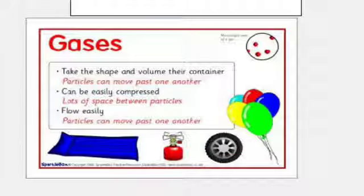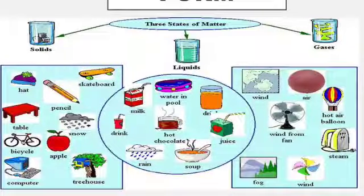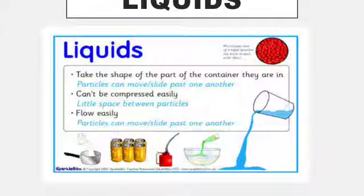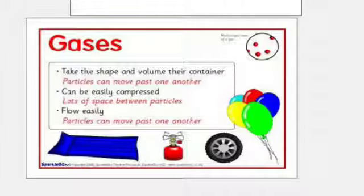What is gas? Take the shape and volume of their container. The shape and volume is not there. The particles move easily. Lots of space. They can flow. These are the particles of gas, which easily move. So, these are solid, liquid and gas and 3 different particles of the movement.